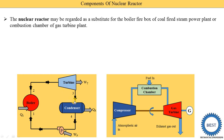In a gas turbine power plant we use the combustion chamber to heat the air or gas coming out from the compressor. In a nuclear power plant the nuclear reactor is used to heat the working fluid, which may be water or different types of gas. In a Rankine cycle or steam power plant the working fluid is steam; in a gas turbine power plant it is air or gas. In a nuclear reactor we are able to use steam as well as gas as a working substance.